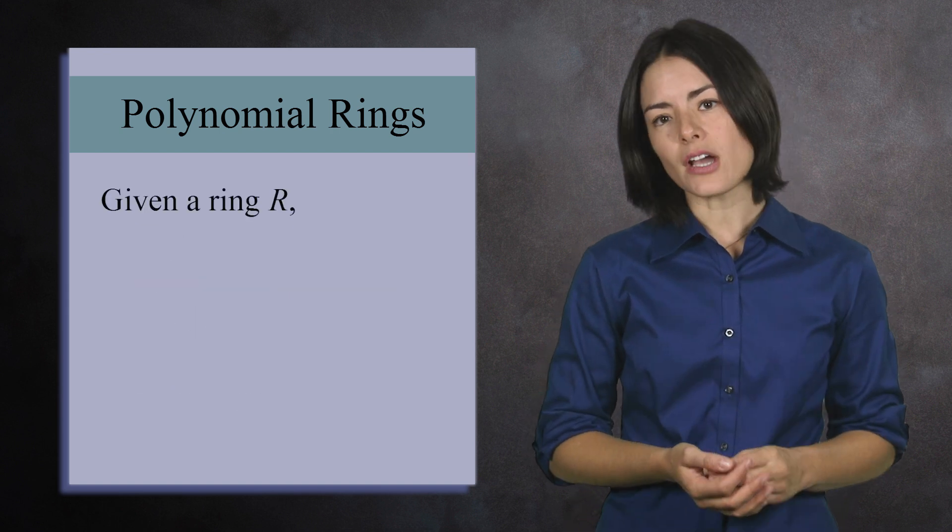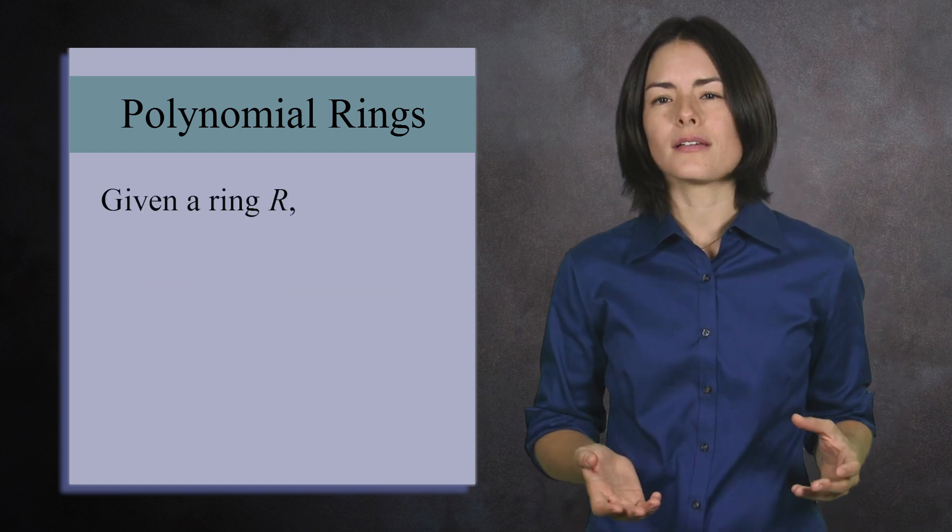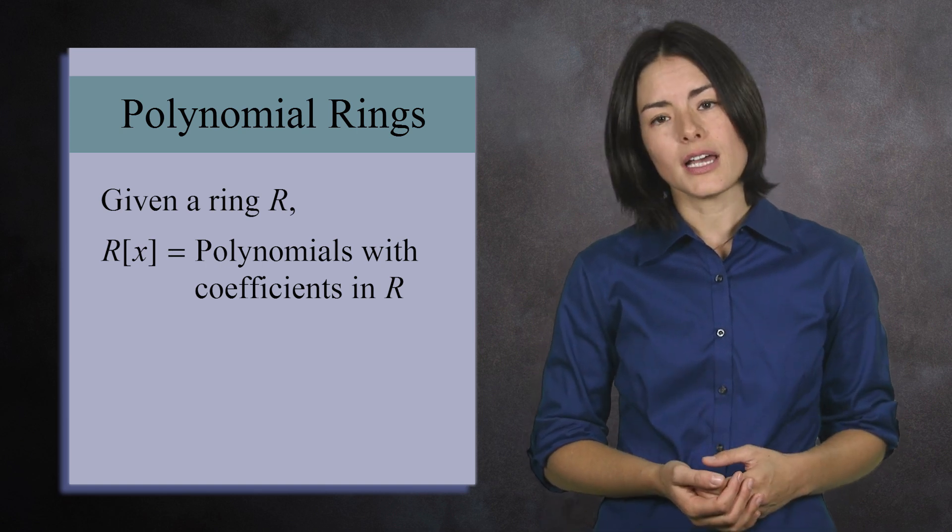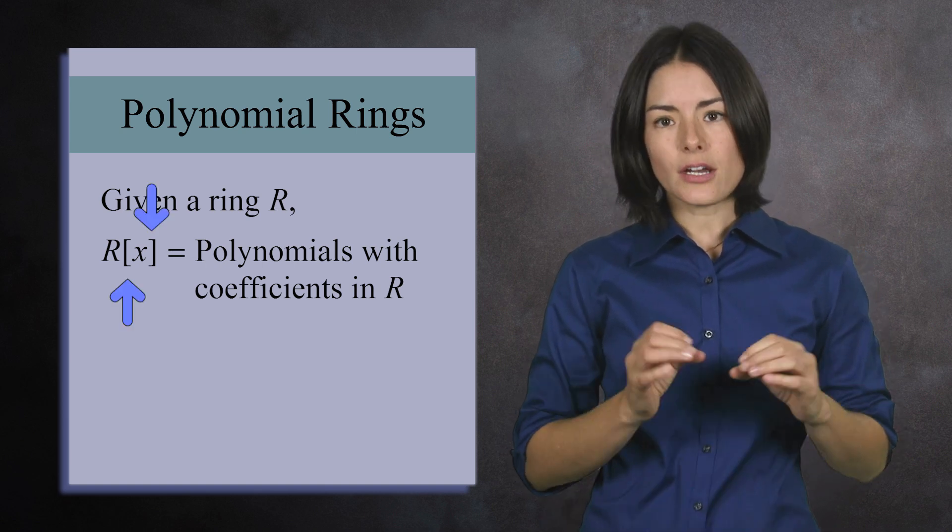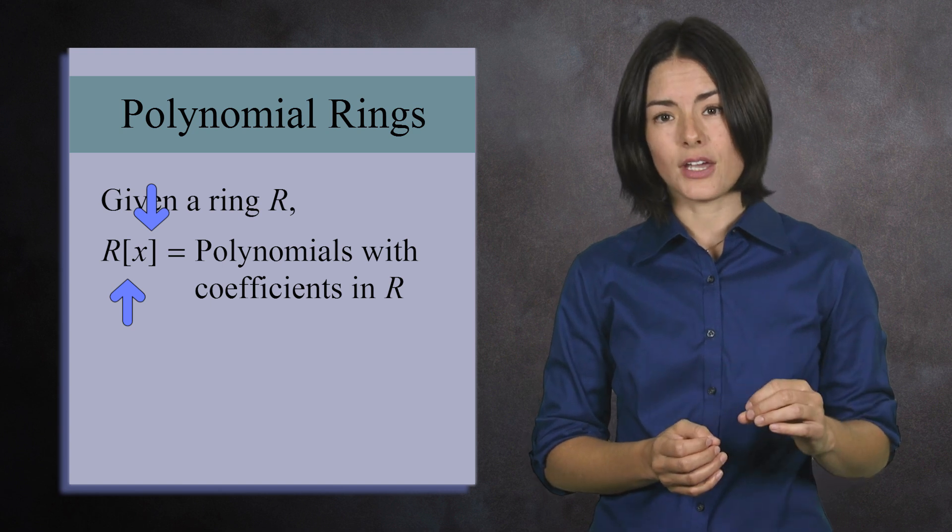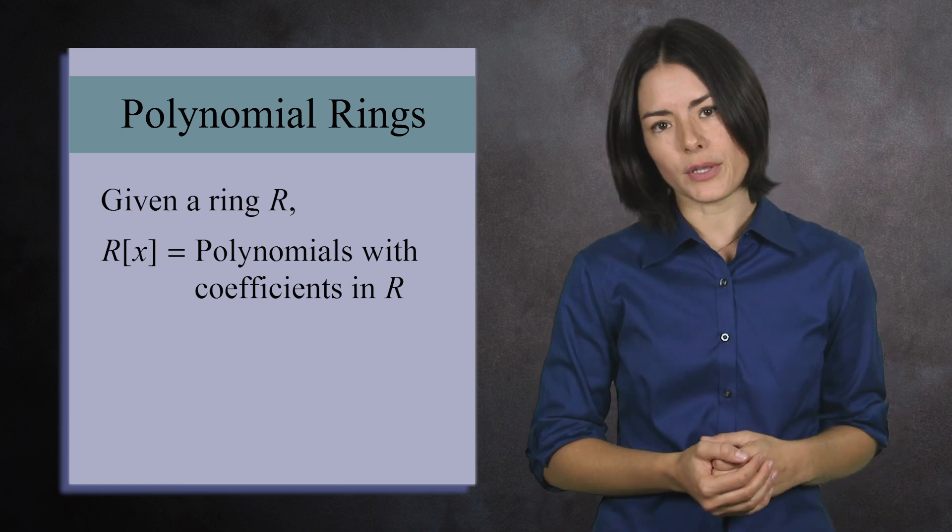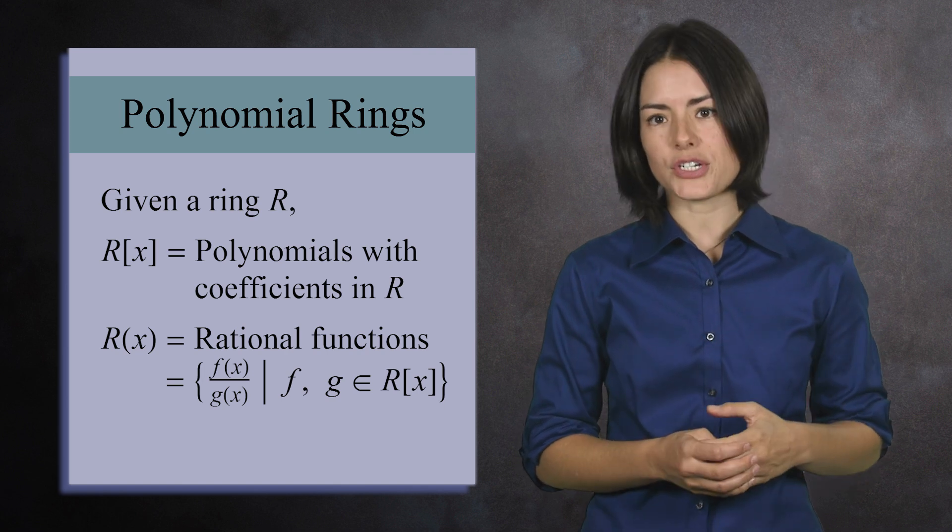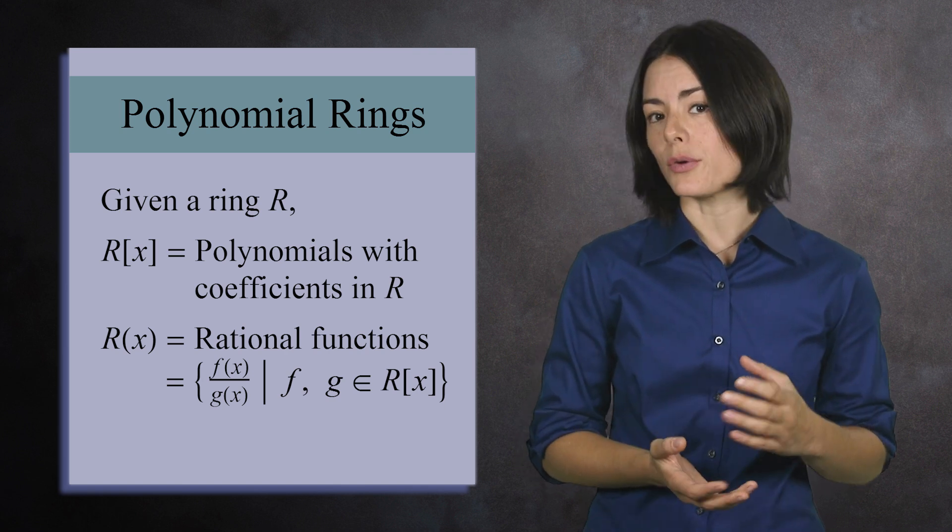So if you are handed a ring R, you can use it to make a new ring. The ring of polynomials with coefficients in R. Here's its notation. Be careful you use brackets and not parentheses. They mean different things. Brackets means the set of polynomials, while parentheses means the set of rational functions, which are fractions of polynomials.